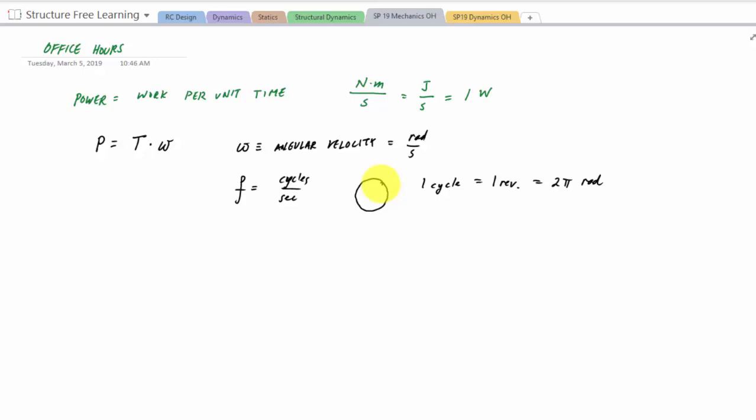And so for us, the important relationship is if given a power requirement and an angular velocity or frequency or like in a car, like an RPM revolutions per minute, how do I determine the torque? So for us, we're going to be using this to get the torque T. This torque is P over omega.